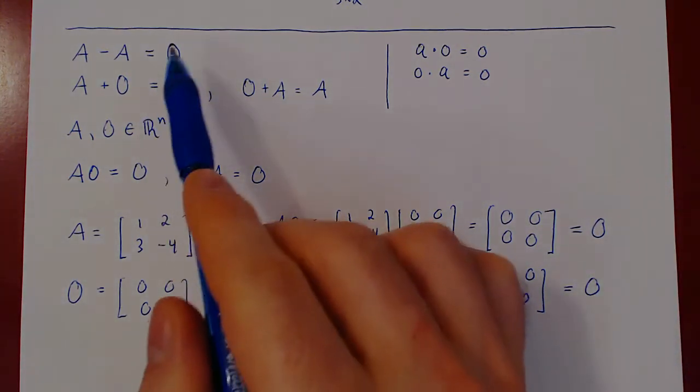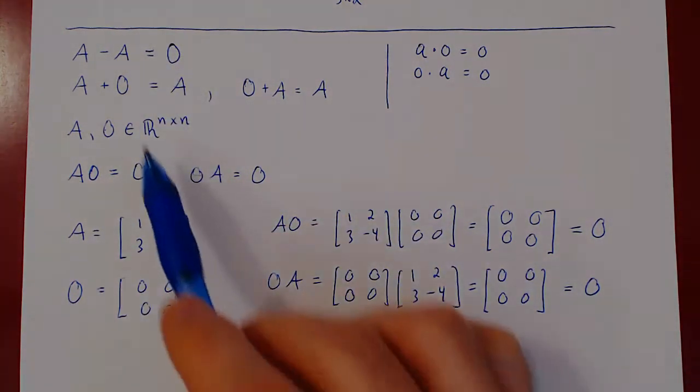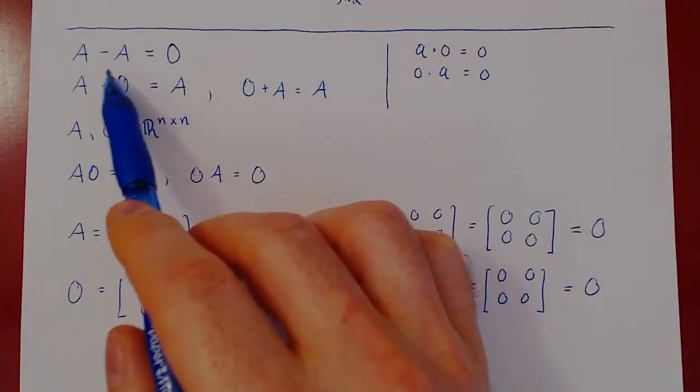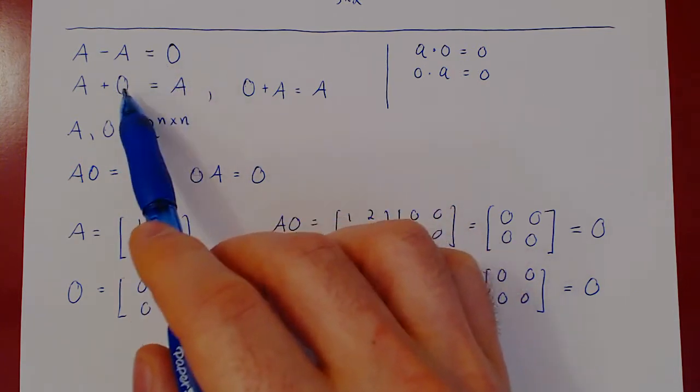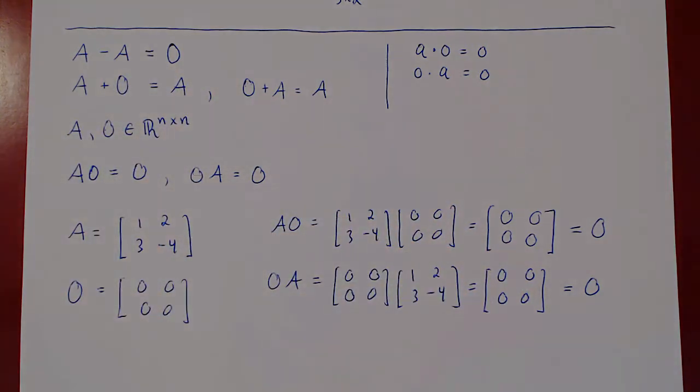So you can write zero when you do algebra on matrices, and the implication is that this is the zero matrix, and it has the same size as the other matrices. And that's it.